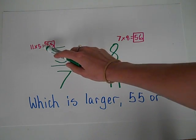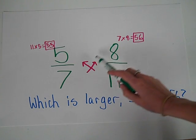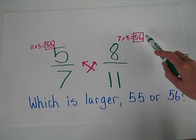11 times 5 is 55, 7 times 8 is 56. Well which is larger? 55 or 56?